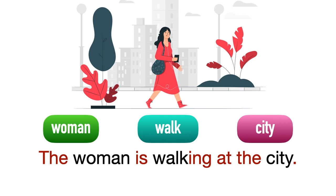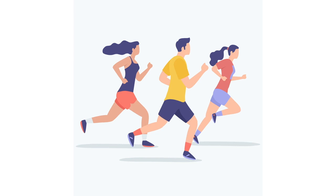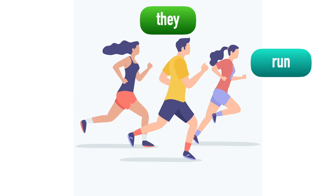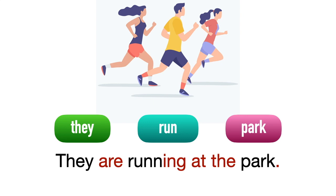Next example — ramai orang, so we use 'they'. The action is run, the place is at the park. They are running at the park. Running berdiri dengan sendirinya — mereka berlari di taman.